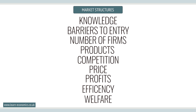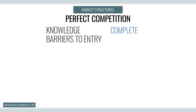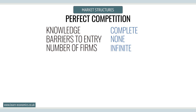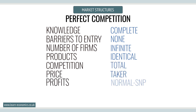Efficiency levels and welfare. For perfect competition, knowledge is complete. There are no barriers to entry. There are infinite numbers of competitive firms. Products are identical. Firms are price takers. Supernormal profits are available in the short run but not the long run. Firms are allocatively efficient in both the short run and long run, but only productively efficient in the long run, and welfare is maximized.